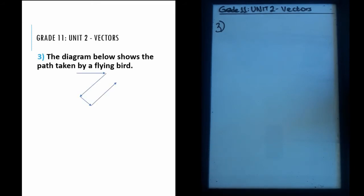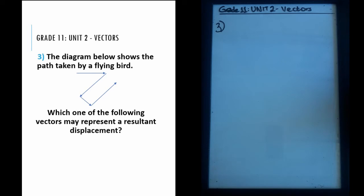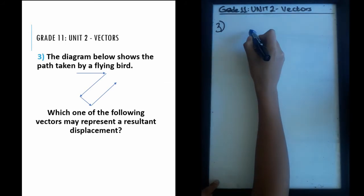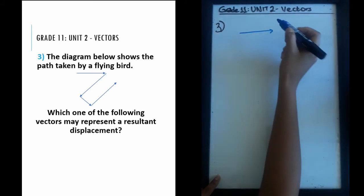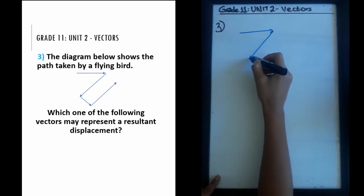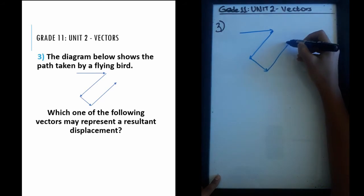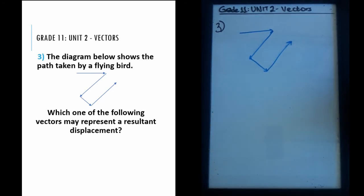We're back for the third question of this series, still on the second unit of grade 11 physics: vectors. The question shows the path taken by a flying bird and asks which vector may represent the resultant displacement. We'll try to figure this out without looking at the choices first. The diagram shows the path of a flying bird from a bird's eye view.